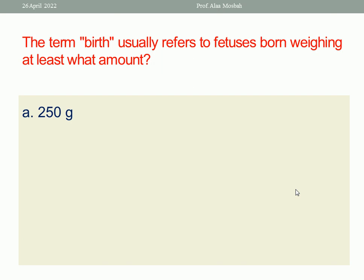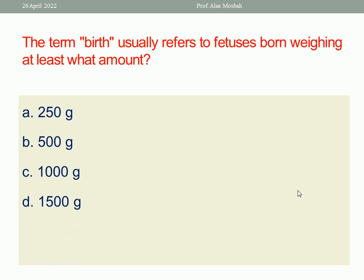Options: 250 grams, 500 grams, 1,000 grams, 1,500 grams, or 2,000 grams. We are saying at least the lowest weight of a fetus to call it a birth, because below it is considered miscarriage. 500 grams is the best answer — either 500 grams or 20 weeks gestational age. Above it is called birth; below it is called miscarriage.